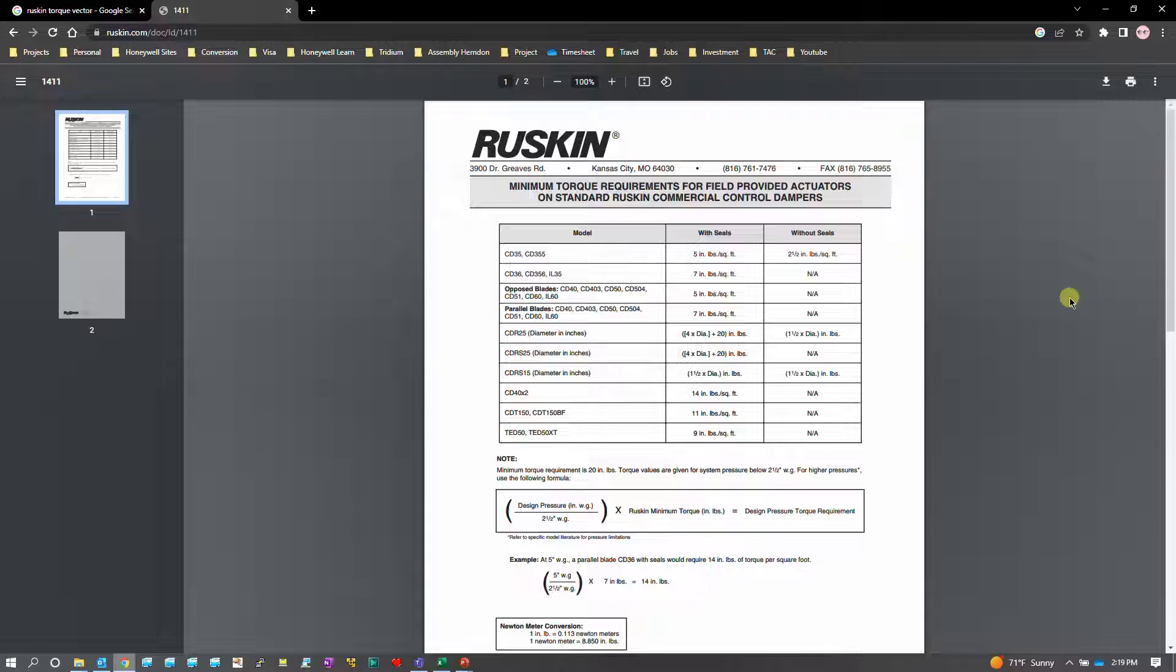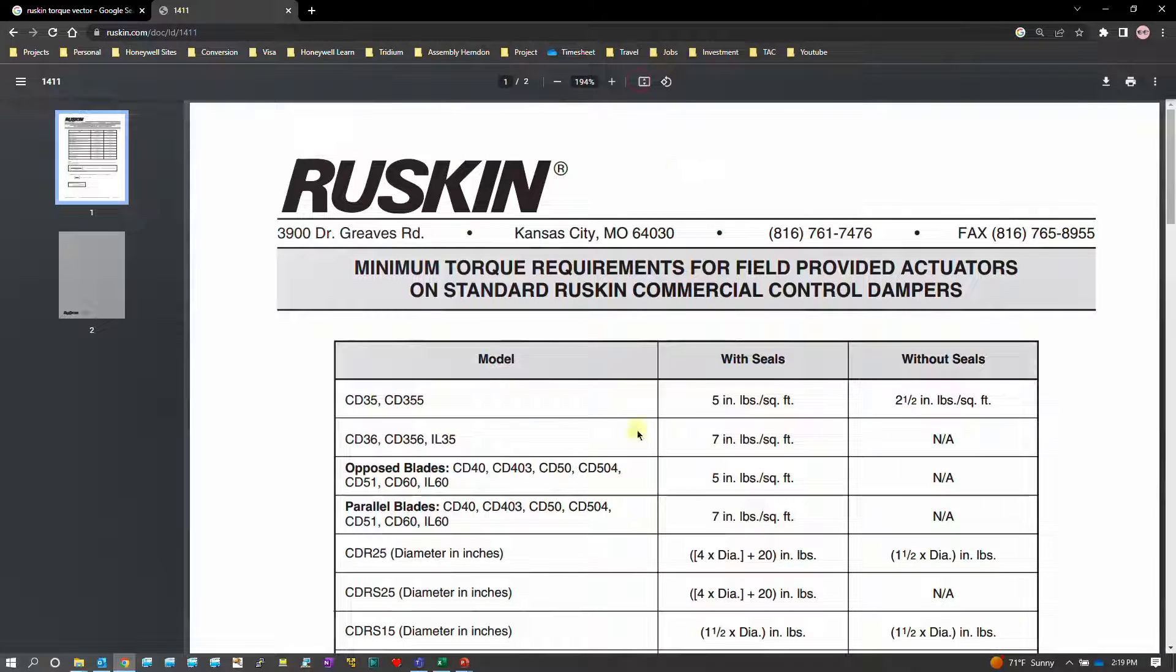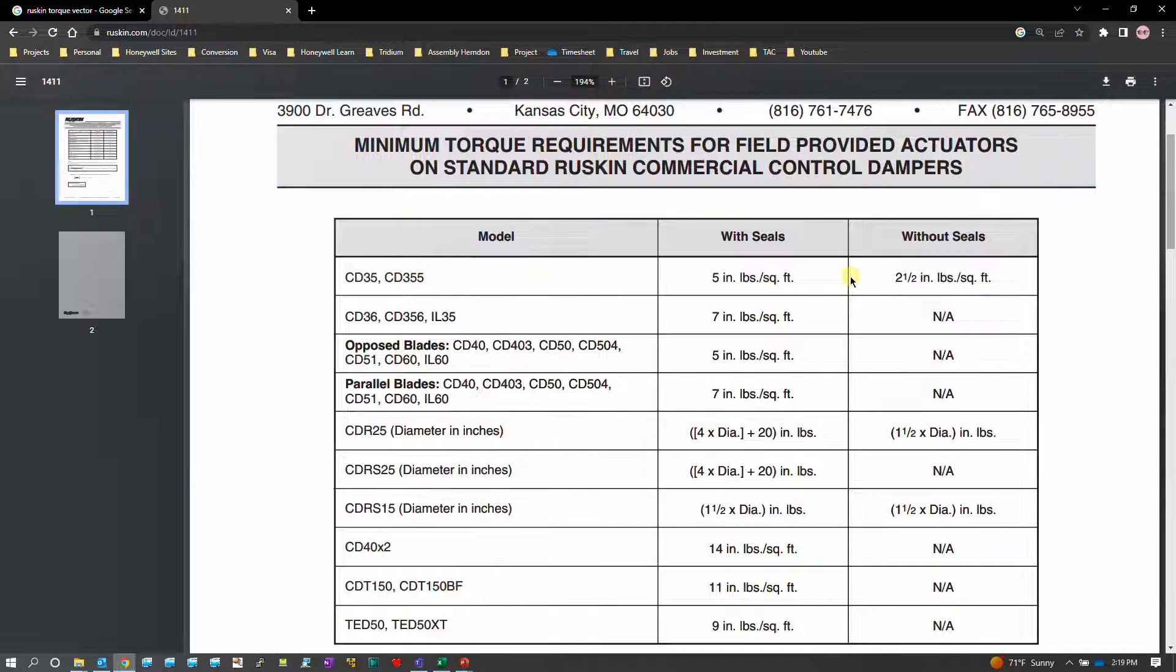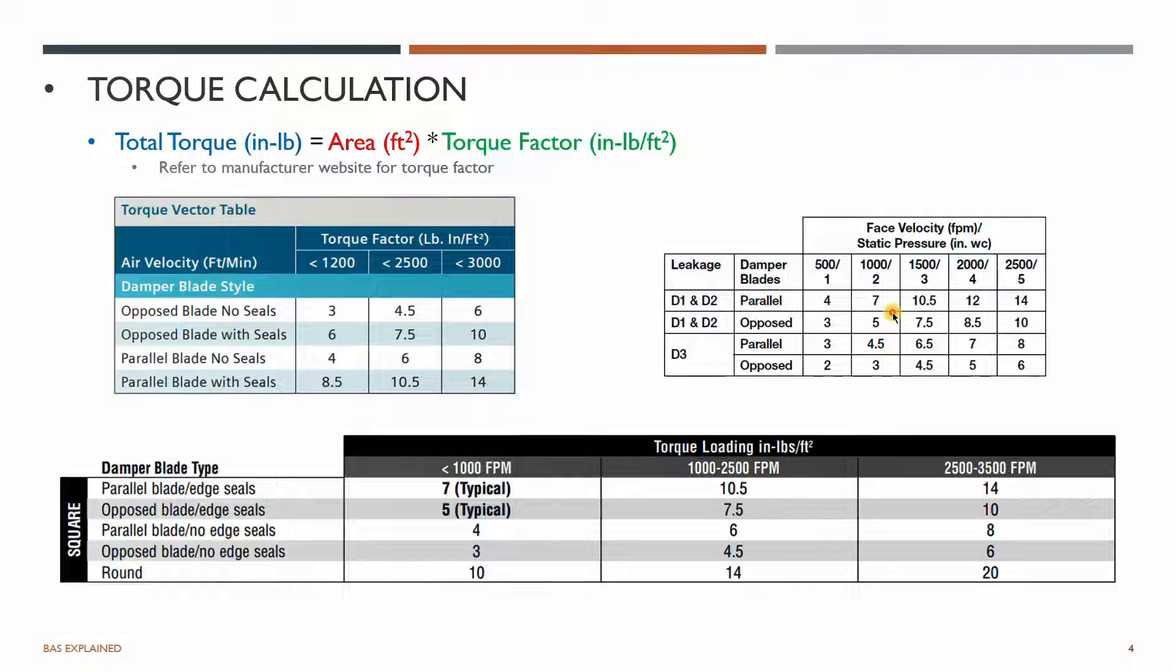With the torque factors what they have given here is with the model numbers, what would be the torque factor which will be coming along, which is 5 inch, 2.5 inch, with seals or without seals based on what you would be selecting. Based on that table I have grabbed a few torque factor tables from different other manufacturers.